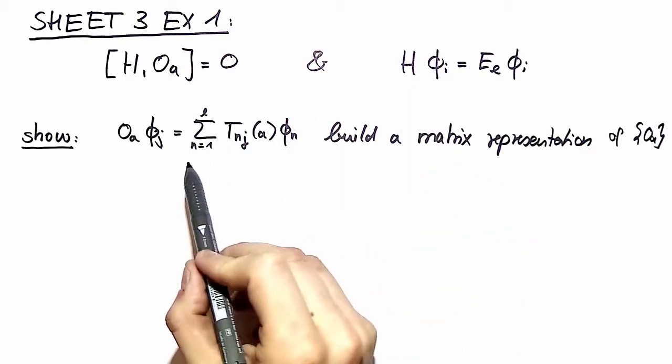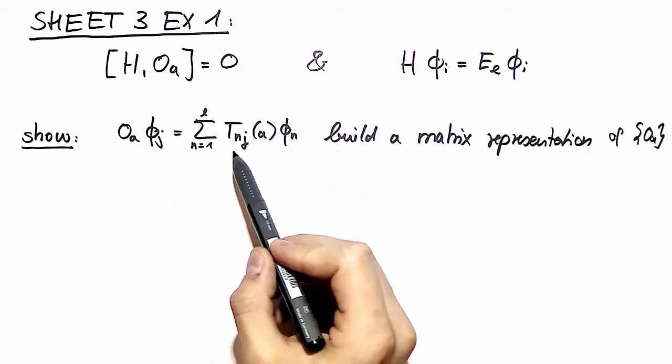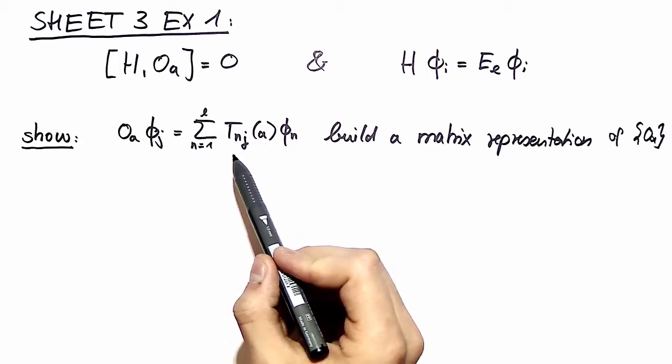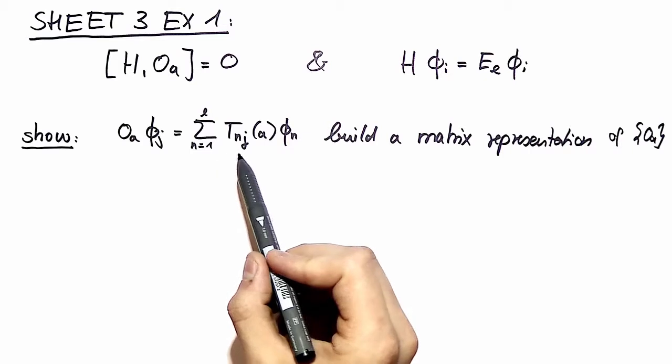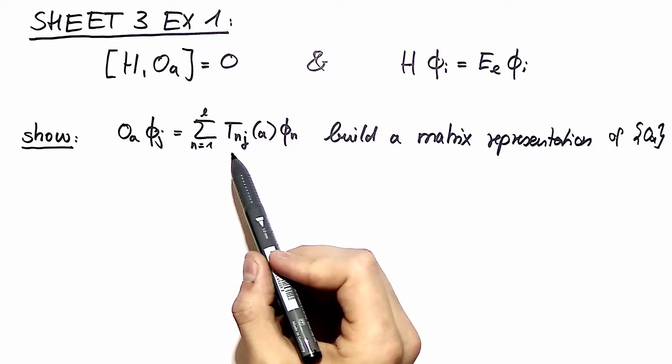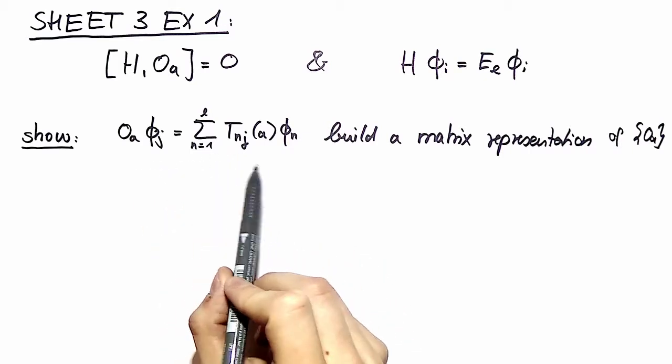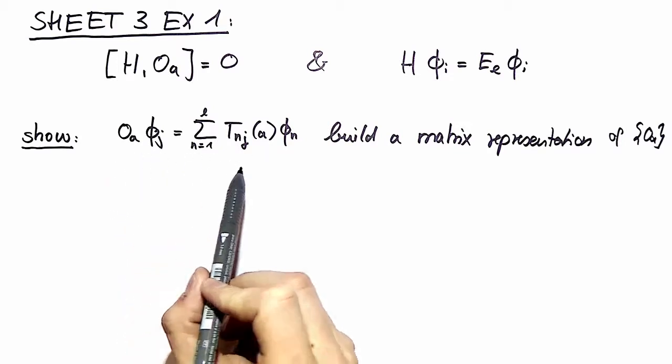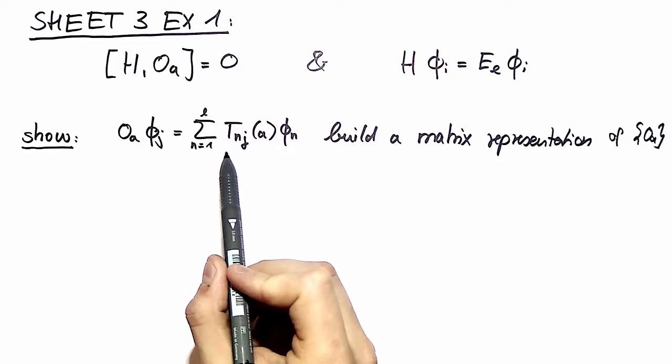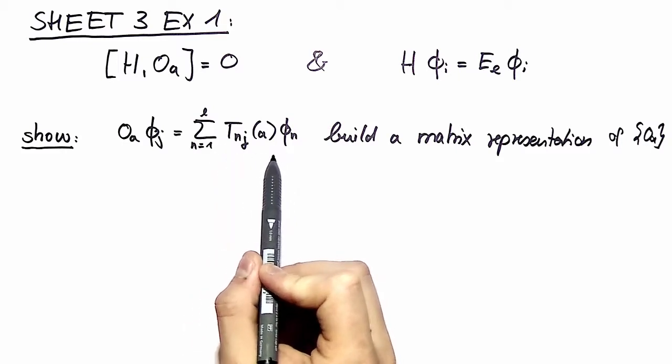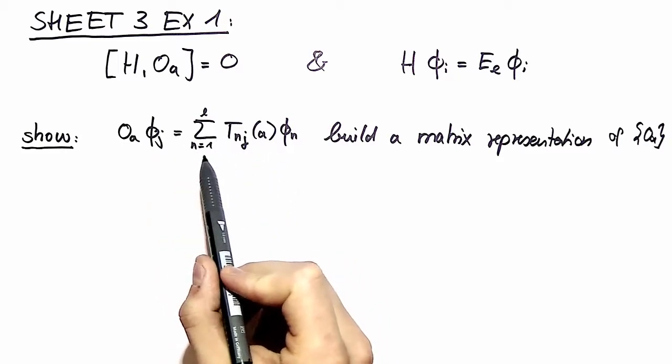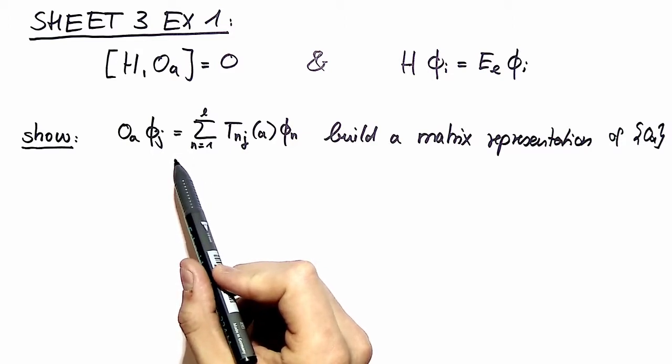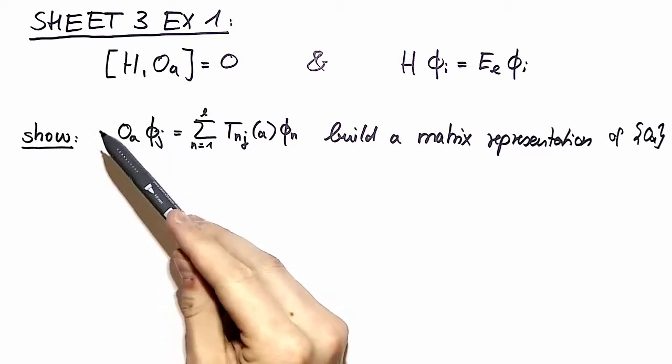So what we have to show is this definition of the matrix elements T and J is in fact a good definition of this matrix representation. This definition means that the transformed vector can be written as a linear combination of vectors out of this eigenspace. And this is equivalent to saying that every eigenspace is left invariant under symmetry transformations which commute with H.